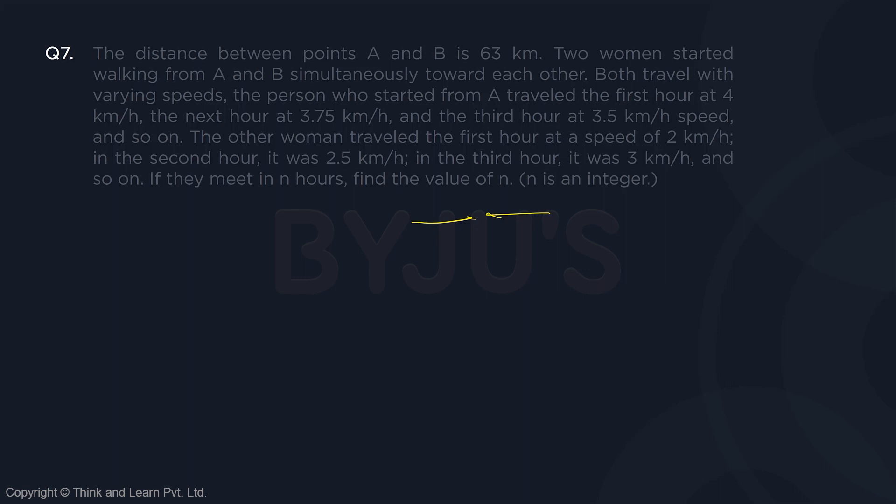First person, in the first hour, distance traveled is 4 and 2, that is 6. In the second hour, it is 3.75 plus 2.5, that is 6.25. Third hour, it is 3.5 and 3, that is 6.5, and so on and so forth. And because it is for n hours, the number of terms will be n.